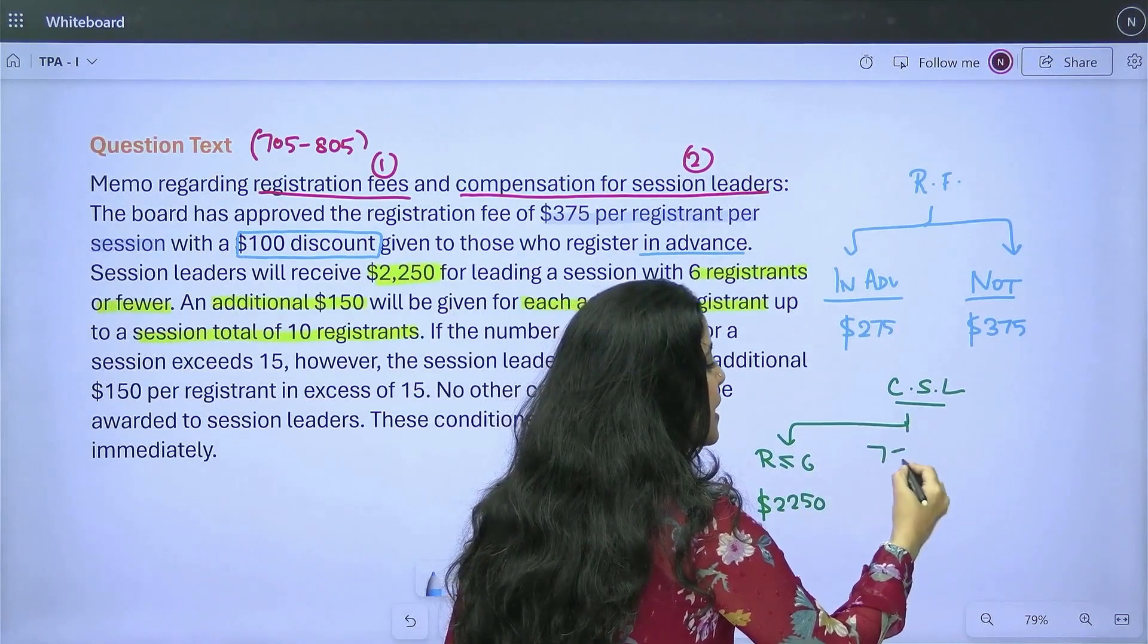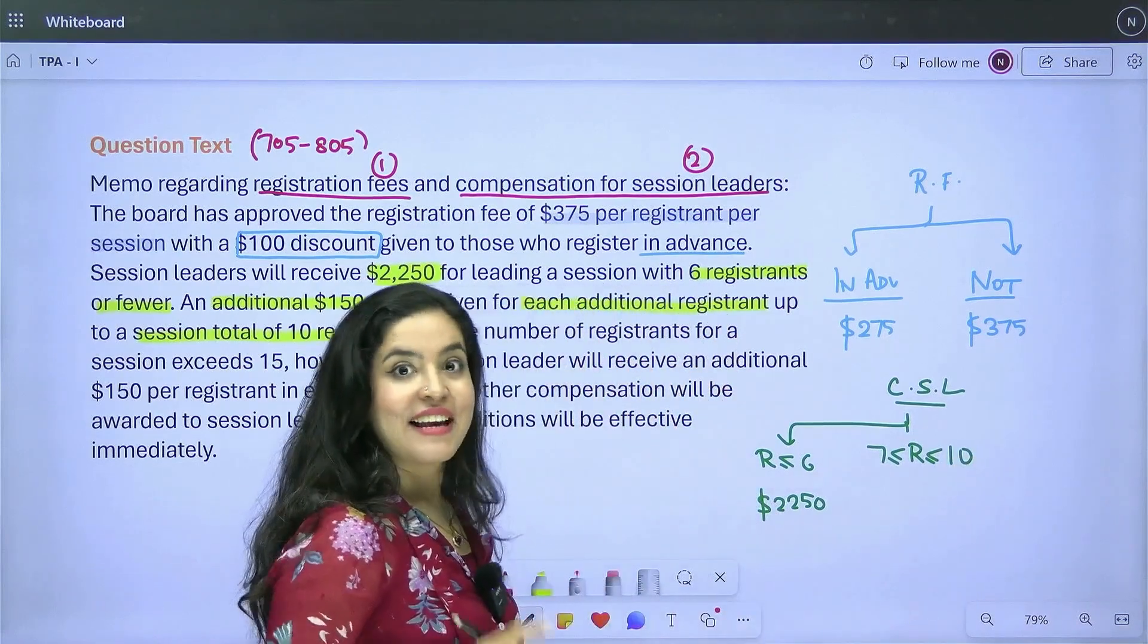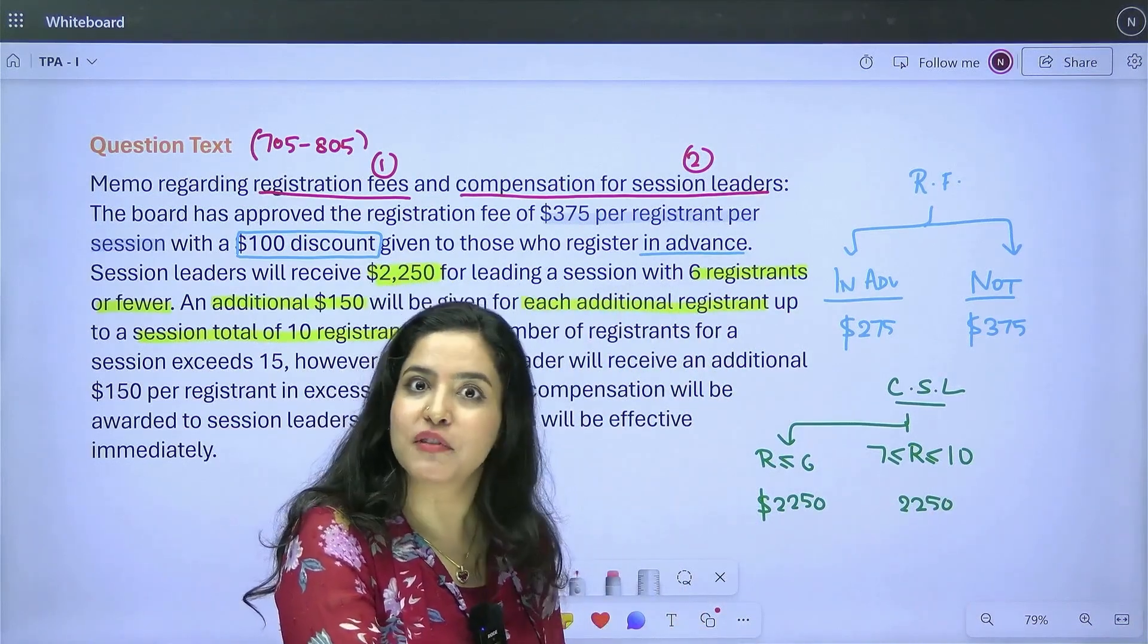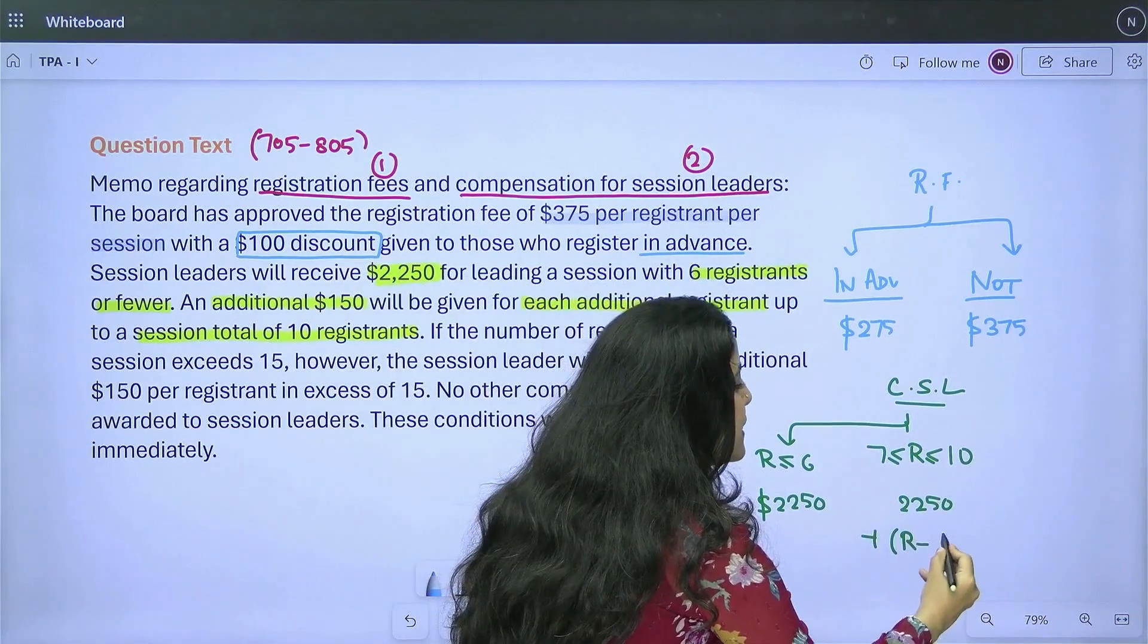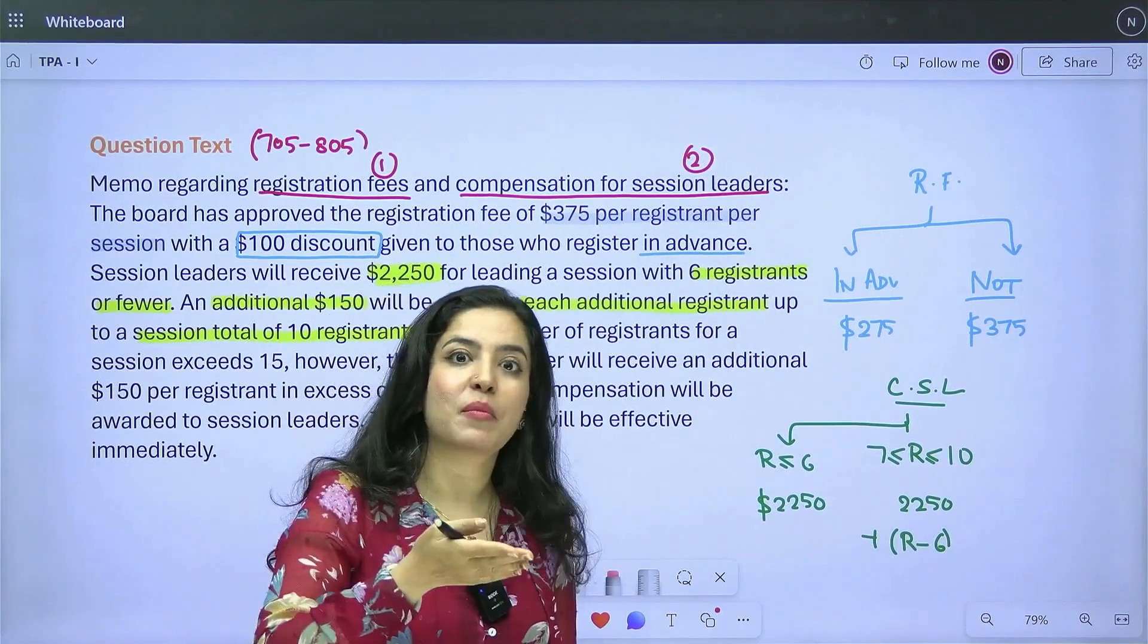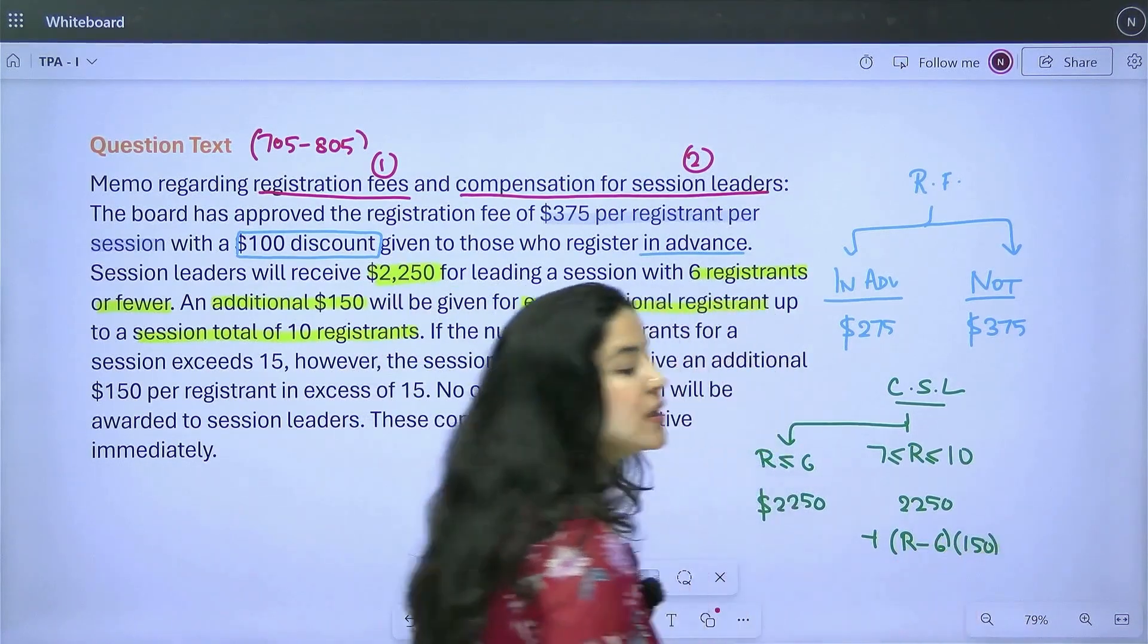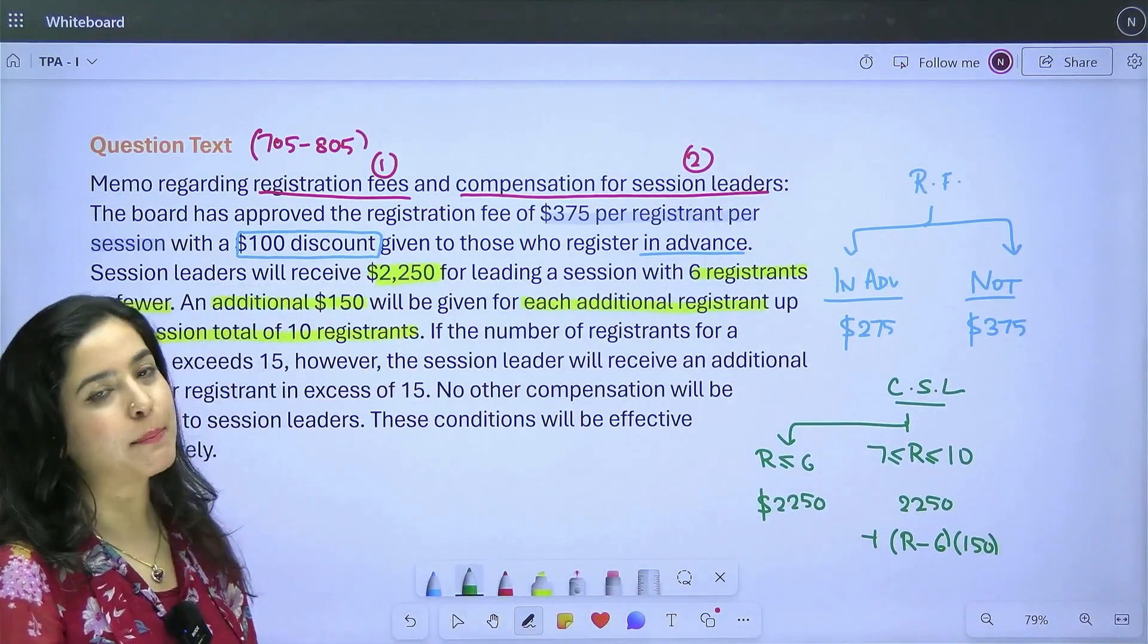This is going to be interesting as I note this down. Look very closely. This is where I have my number of registrants between seven and 10. Now what is the total compensation? Well, nothing changes about the $2,250. Why? Because it's an additional $150 I'm getting. It doesn't remove the $2,250. The additional is going to be R minus six. Listen very carefully here. Six is what I started with. R is the number of registrants. R minus six means the additional that I have. For each of these, I'll get $150. This is the second category. So I'm definitely making more this way. The session leader is being paid more this way.